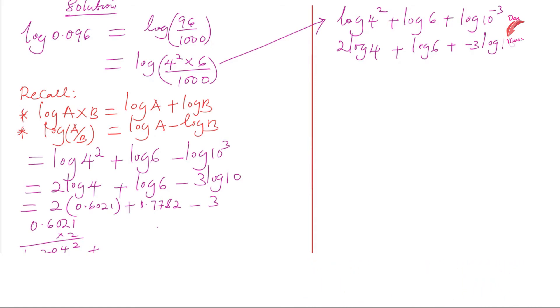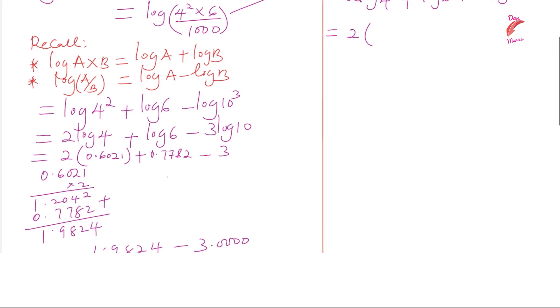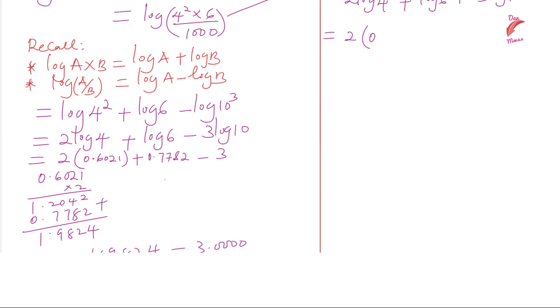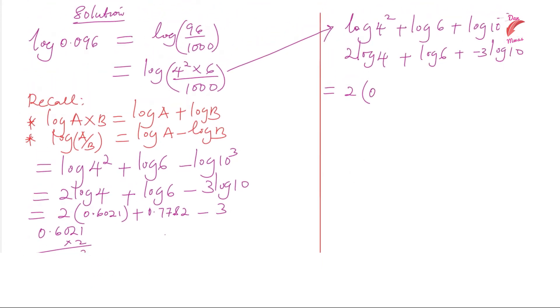So we substitute: 2 into brackets, log 4 is 0.6021, plus log 6 is 0.7782.